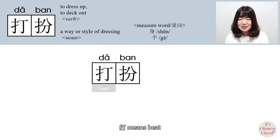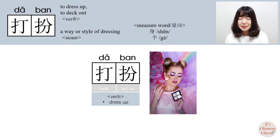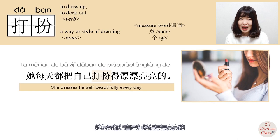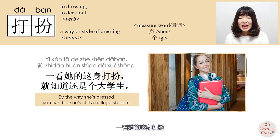打 means 'beat' and 扮 means 'act as,' so 打扮 means 'dress up.' For example: 他每天都把自己打扮得漂漂亮亮的 (He dresses himself up beautifully every day). 一看他的这身打扮就知道还是个大学生 (Just looking at his outfit, you can tell he's still a college student).